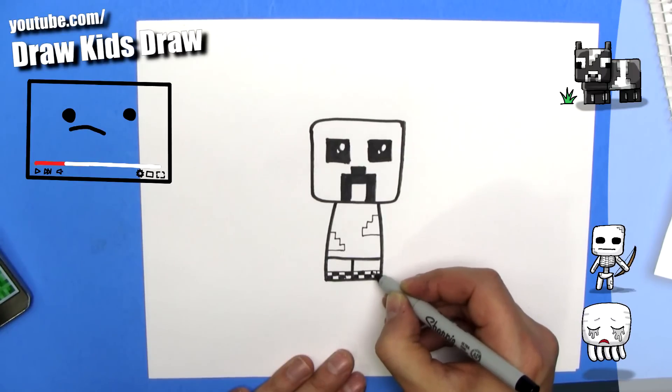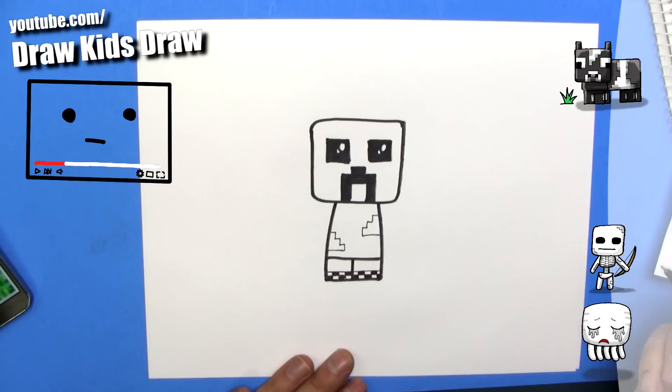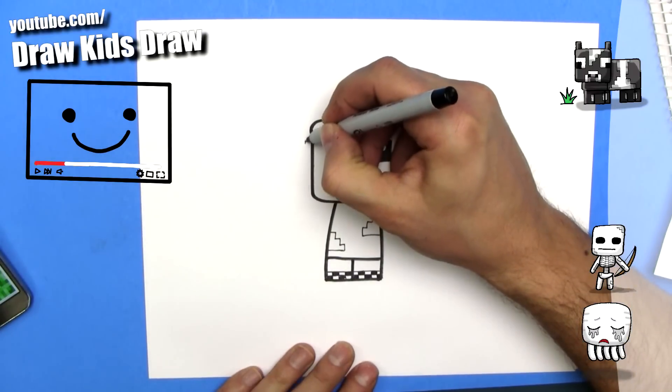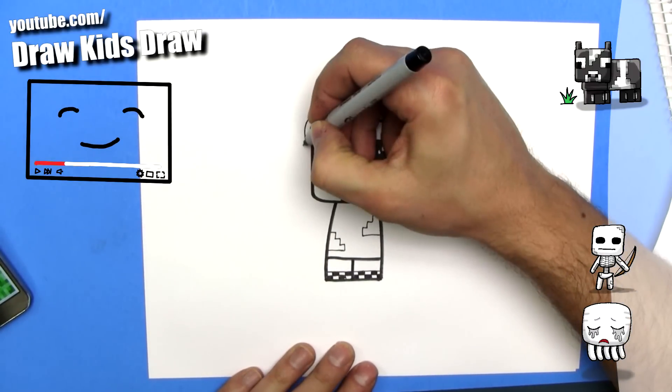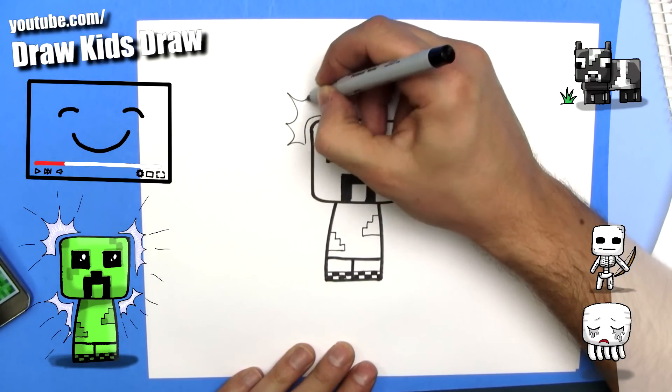All right, so, that is how you draw a super easy chibi. Wait a minute, let's add this. We'll add some effects, so he's like exploding. Yeah.